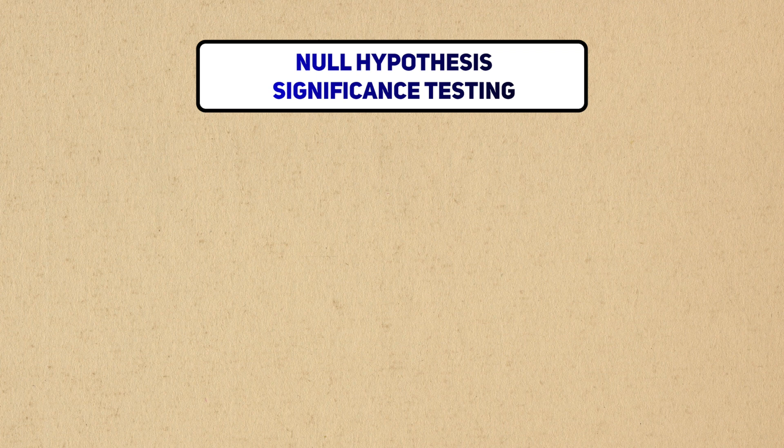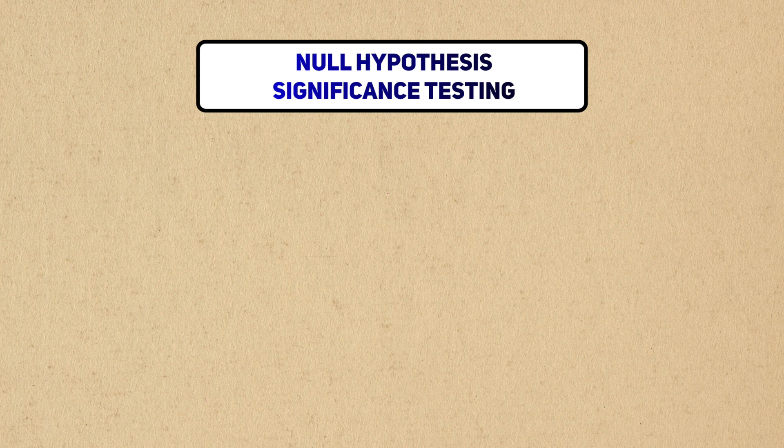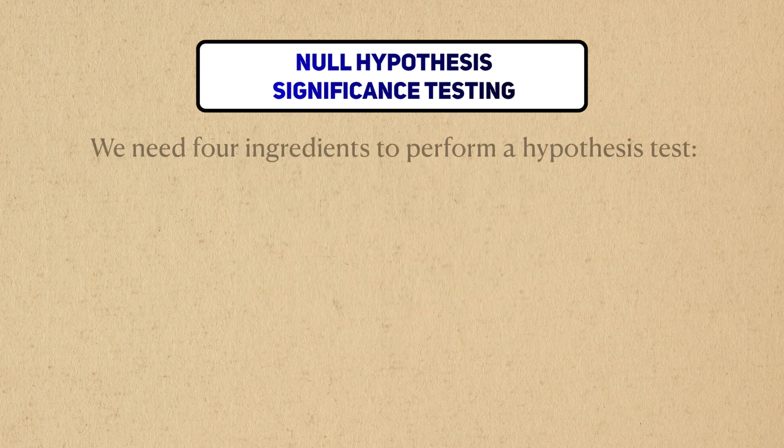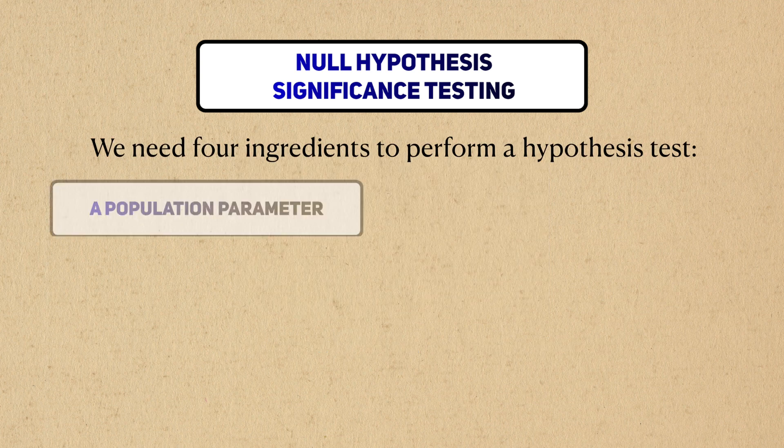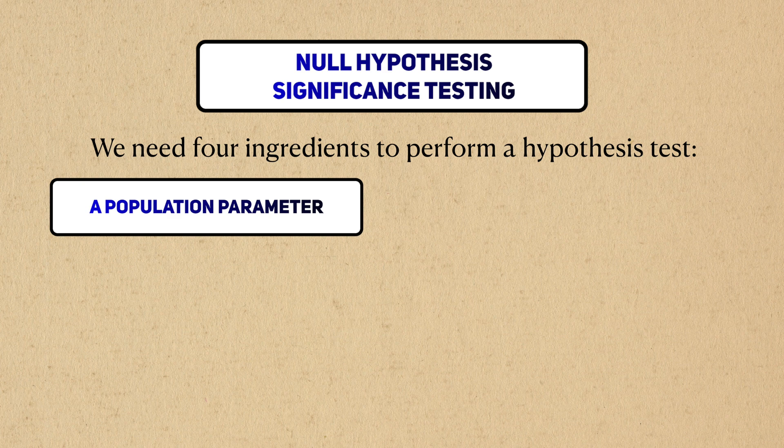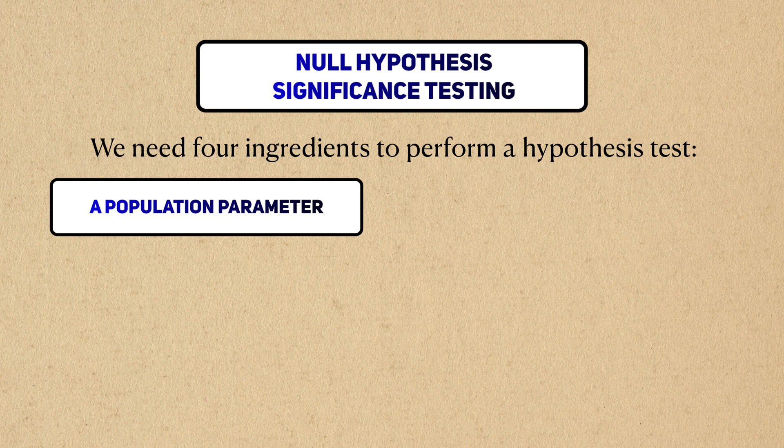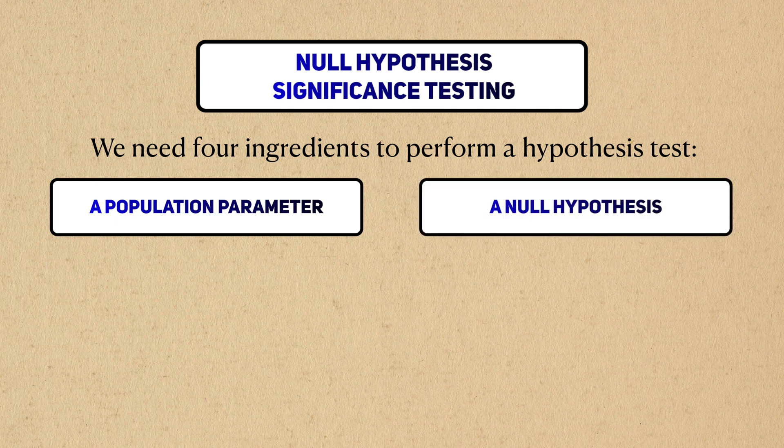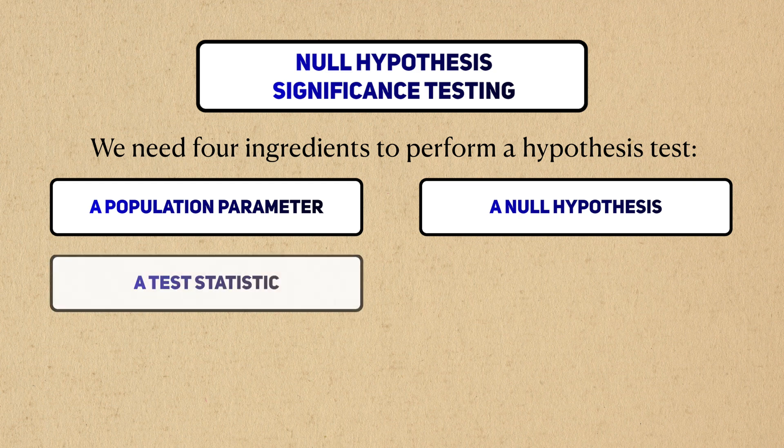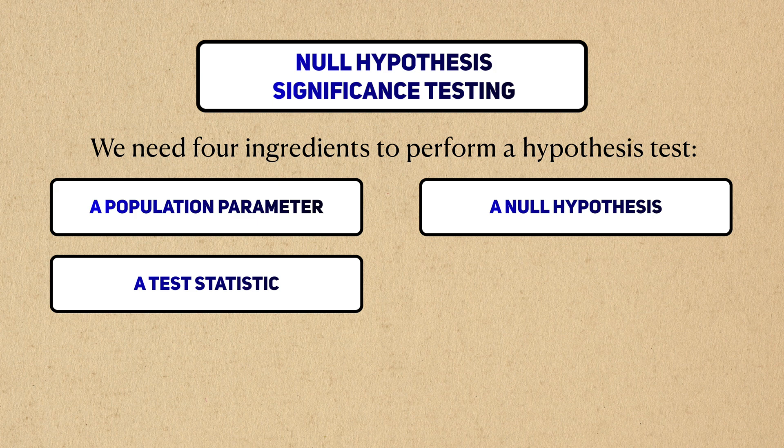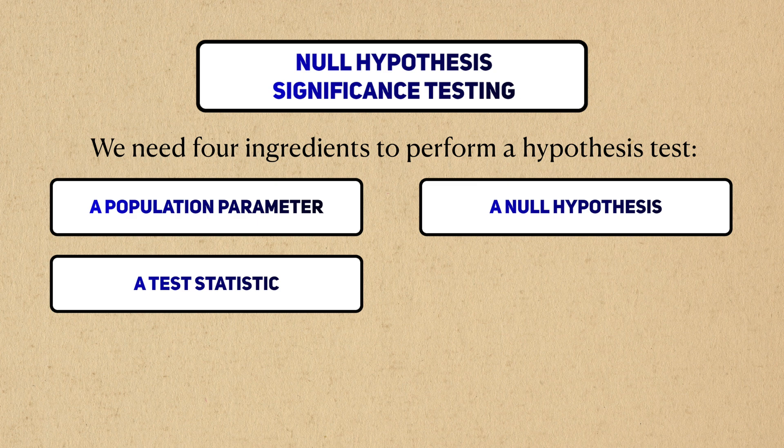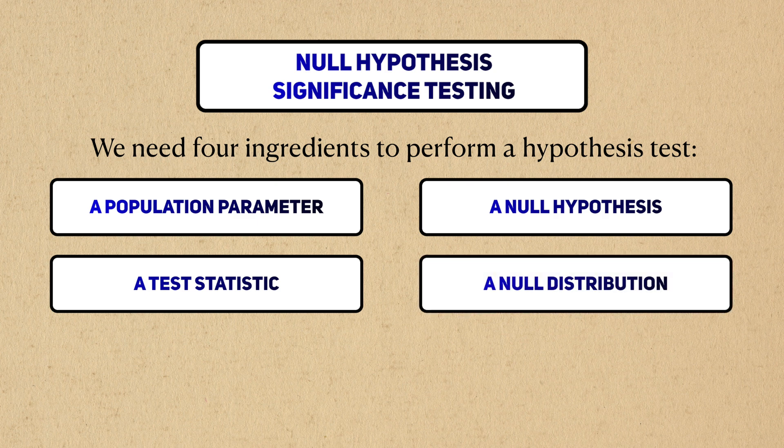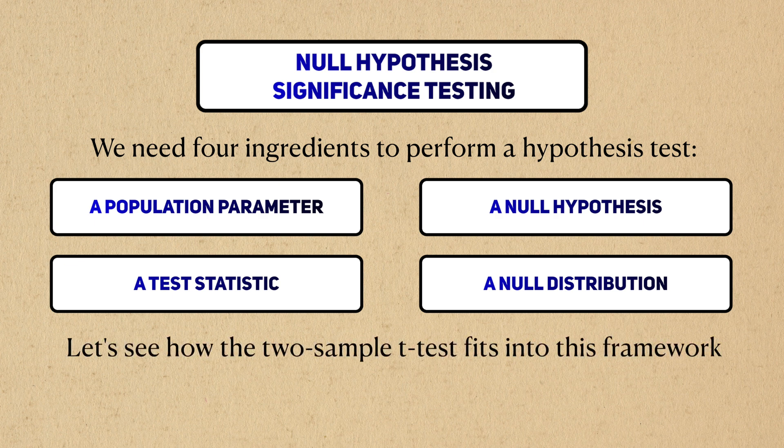Since we're learning about a hypothesis test, we'll break things down in terms of the Null Hypothesis Significance Testing Framework, or NHST. If you don't know what that is, or need a refresher, take a look at the training video for the one-sample t-test. We need four things to perform a hypothesis test: 1. A parameter of interest that represents a quantity we want to study for our research problem. In this case, it's a comparison of means. 2. A null hypothesis, which represents a statement about this parameter that we want to disprove. 3. A test statistic that's related to our parameter of interest. We calculate this statistic from actual data, and we eventually use it to make a decision to reject or fail to reject the null hypothesis. And finally, the distribution of this test statistic assuming that the null hypothesis is true, otherwise known as the null distribution.